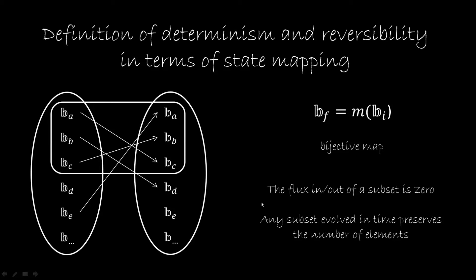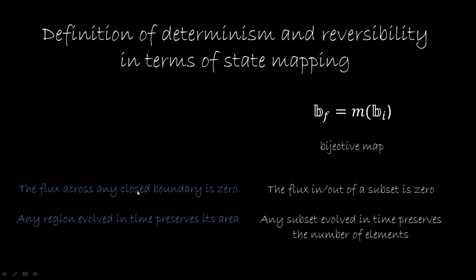But now let's look at these two properties that we have found, and compare them to the properties that we had for Hamiltonian mechanics in phase space. So in Hamiltonian mechanics, we said that the flux across any closed boundary is zero. And here we have that the flux in and out of a subset is zero. In Hamiltonian mechanics, we have that any region evolved in time preserves the area. And here we have that any subset evolved in time preserves the number of elements. You see, these two things are the same. It's just that this is for the discrete case, and this is for the continuous case. So the bijective map already has this idea of flux being conserved and number of states or area being conserved. So what we need to do is to make the limit right in such a way that we're not going to lose, we're not going to forget these two properties.